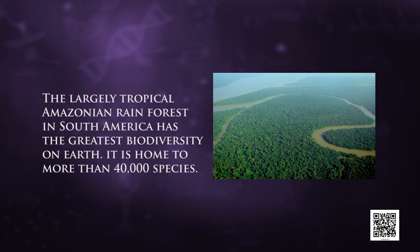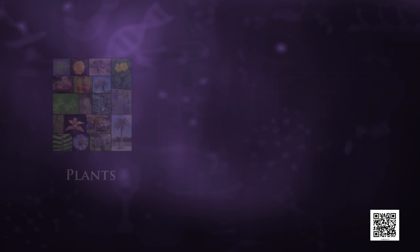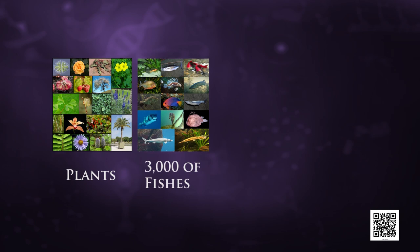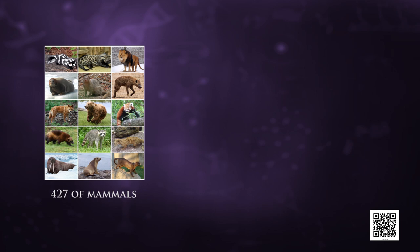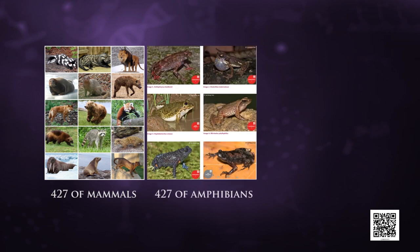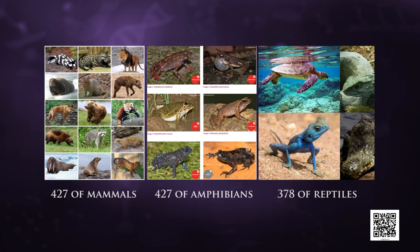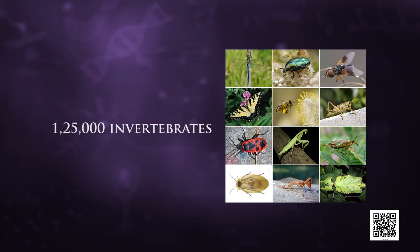The largely tropical Amazonian rainforest in South America has the greatest biodiversity on earth. It is home to more than 40,000 species of plants, 3,000 of fishes, 1,300 species of birds, 427 species of mammals, 427 of amphibians, 378 species of reptiles, and more than 1,25,000 invertebrates. Scientists estimate that in these rainforests there might be at least 2 million insect species waiting to be discovered and named.